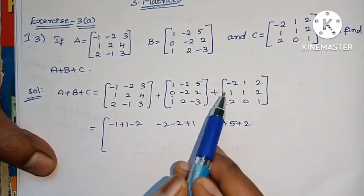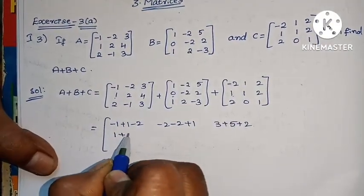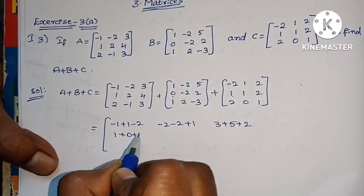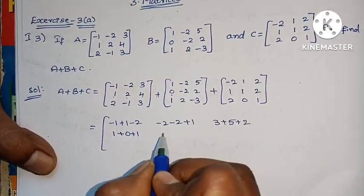Next row: 1, 0, 1, then 1 plus 0, plus 1, then 2 plus minus 2.